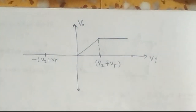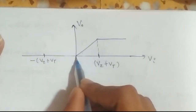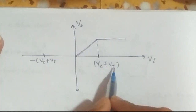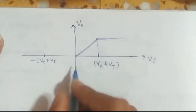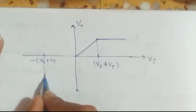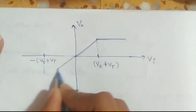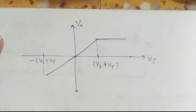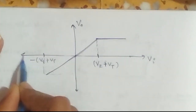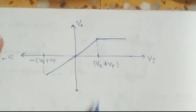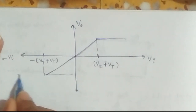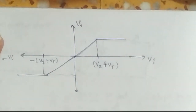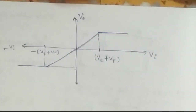So the transfer characteristics plot shows V0 versus VI. For VI less than VZ plus VT, the output directly follows the input. When the input becomes greater than VZ plus VT, the output becomes constant at VZ plus VT. Similarly in the negative cycle, V0 follows the input up to minus (VZ plus VT), after which the output becomes a constant at minus (VZ plus VT). This is our transfer characteristics.